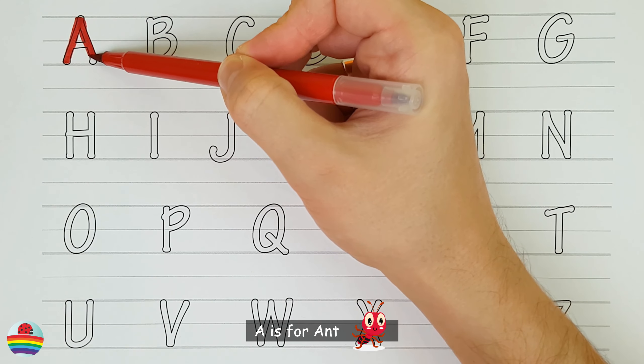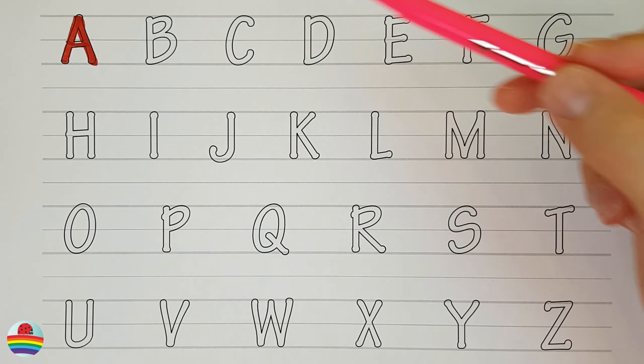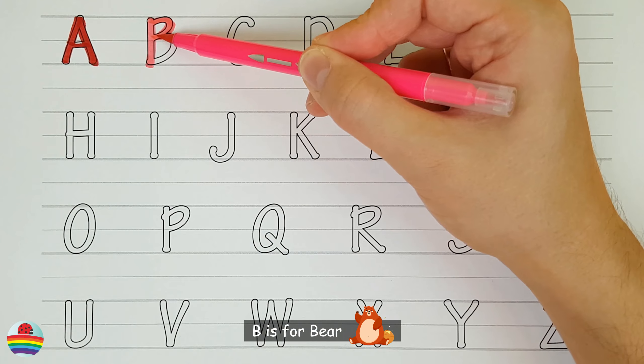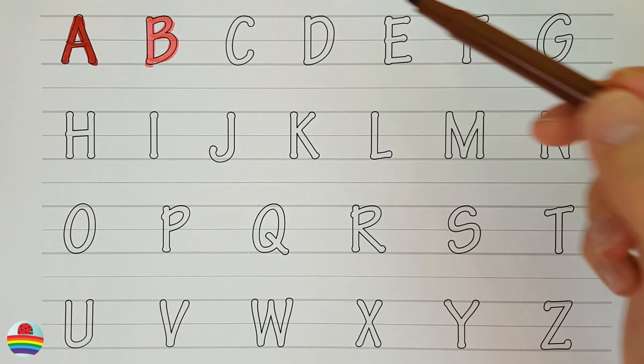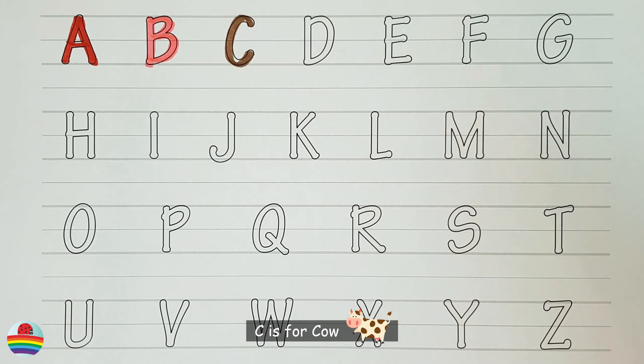A. A is for ant. A. B. B is for bear. B. C. C is for cow. C.